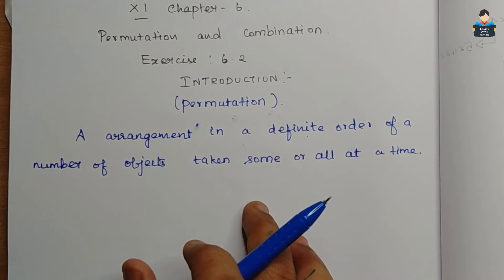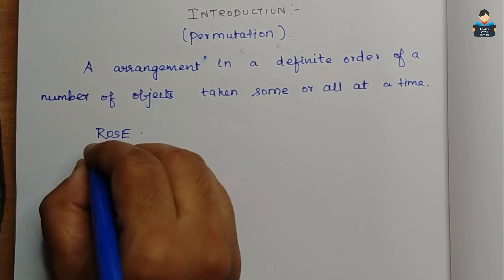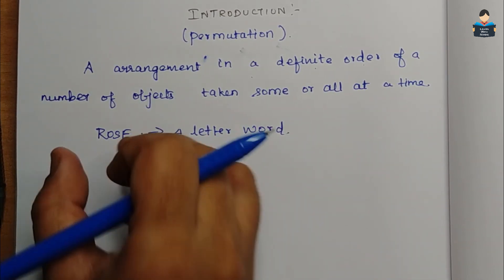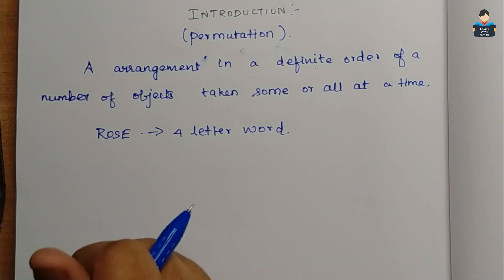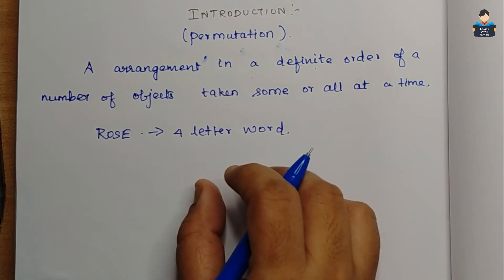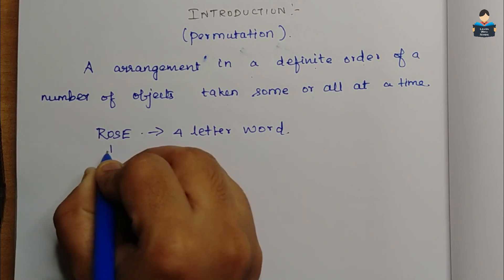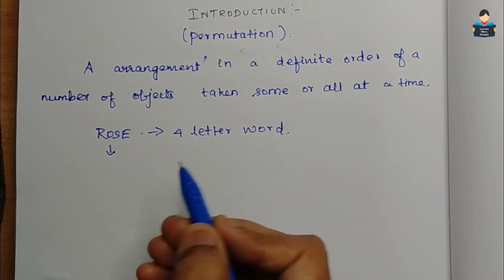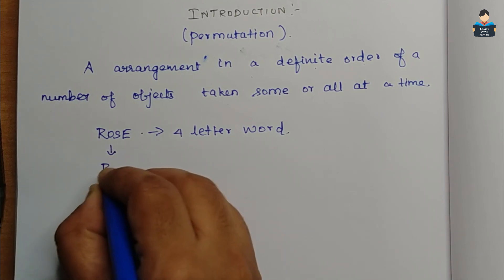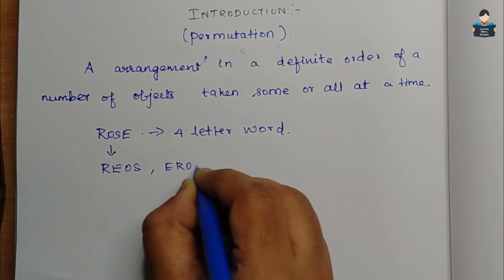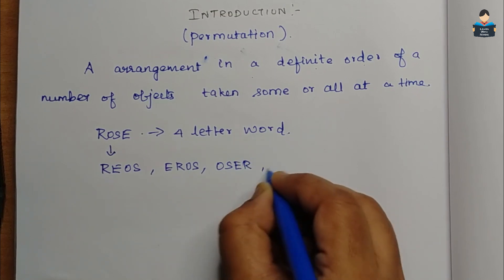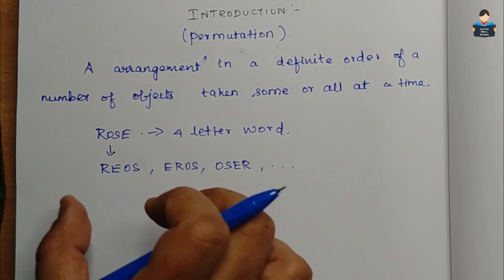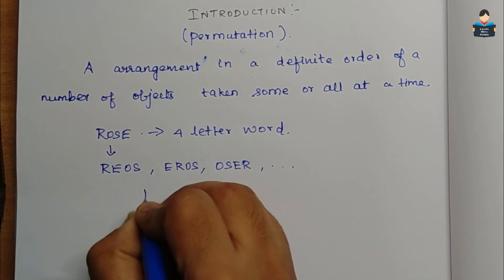Say for example, 'ROSE' — we will start. This is a four-letter word. So now we will arrange. One arrangement we will say: permutation of four different letters taken all at a time. That is the word ROSE — different arrangements we will do.